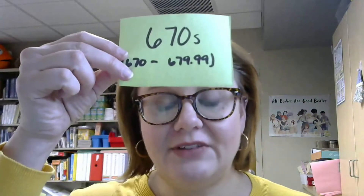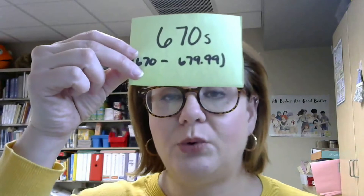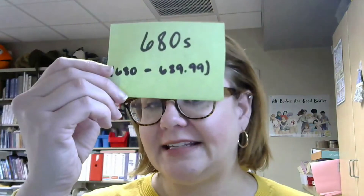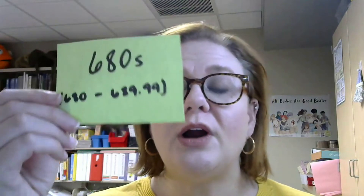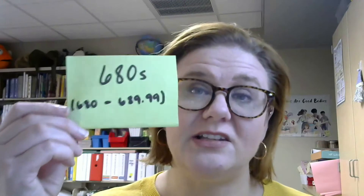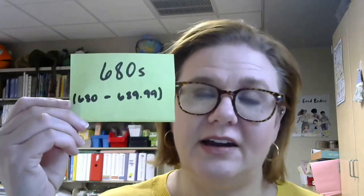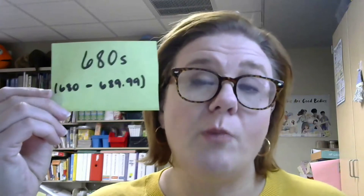Next we have the 670s — that's 670 to 679.99 — and this section covers manufacturing: the very broad field of manufacturing goods, things like how lumber is manufactured, things like mining, the very broad areas of manufacturing. Then in the 680s — that's 680 to 689.99 — we learn more about manufacturing for specific purposes: how textiles are created, how very specific mechanical instruments are created, including things like home appliances.